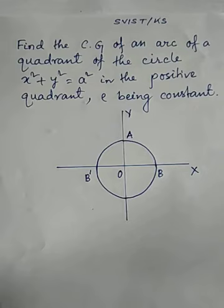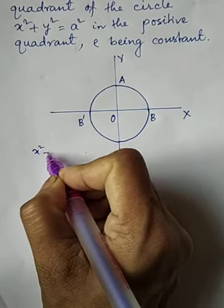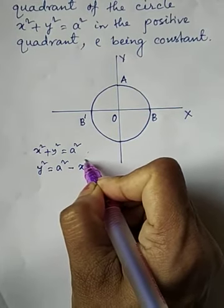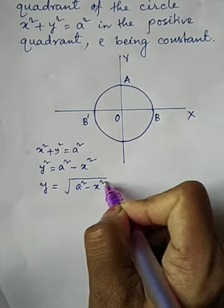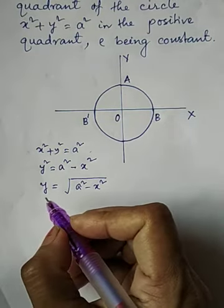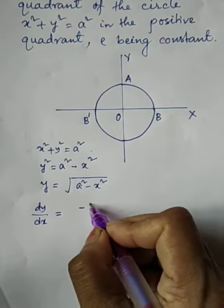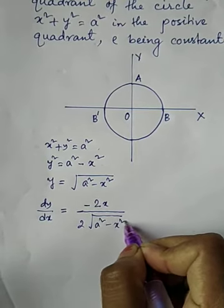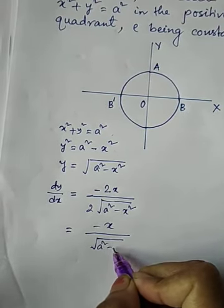The circle is drawn here. The circle equation is x² + y² = a². So y² = a² − x², and therefore y = √(a² − x²), because this is in the positive quadrant. From here we can find dy/dx: dy/dx = −x divided by √(a² − x²).